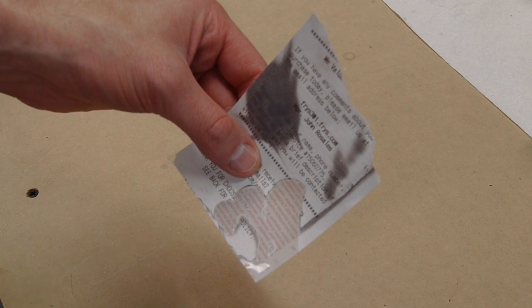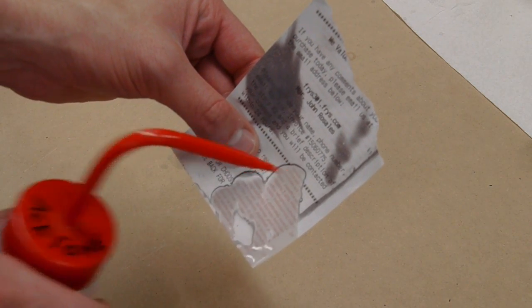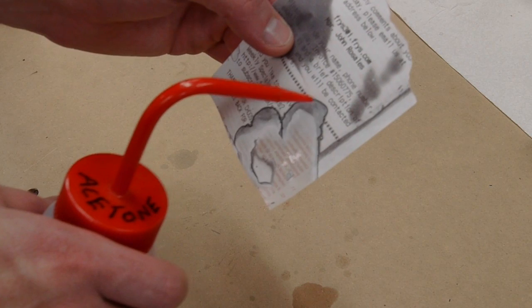The acetone completely erases the ink, and then as the acetone dries, it kind of makes this strange sort of pattern. I guess it's carrying the ink to the edge of the droplet, kind of like a chromatography sort of thing.